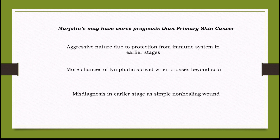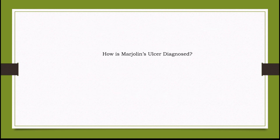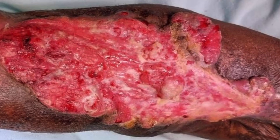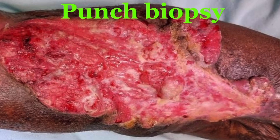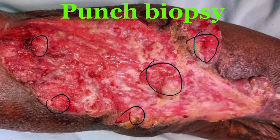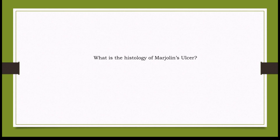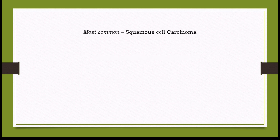How is Marjolin's ulcer diagnosed? Any new wound over a scar, especially if raised, or a chronic non-healing wound, must undergo biopsy. Tissue biopsy should be taken from suspicious areas of both the edge and the central area.